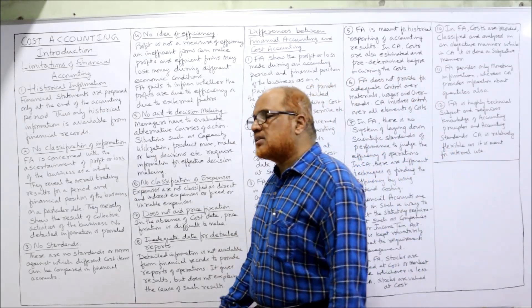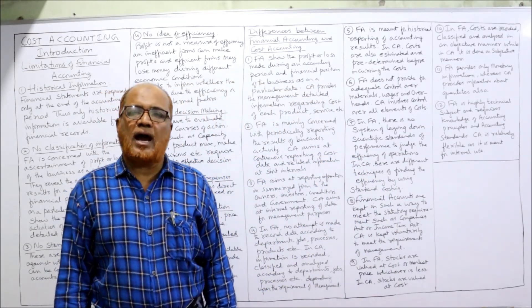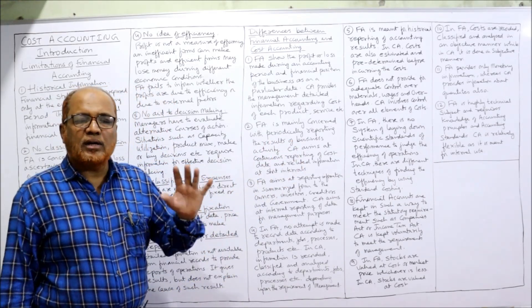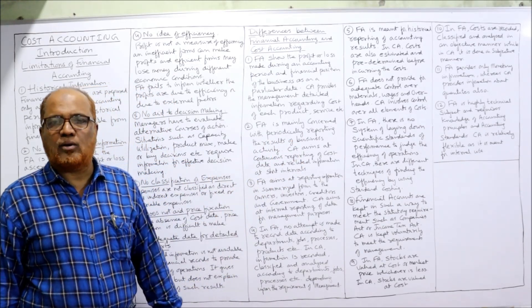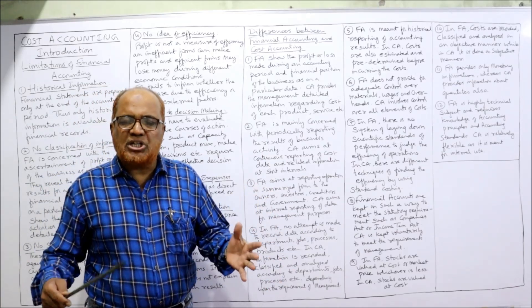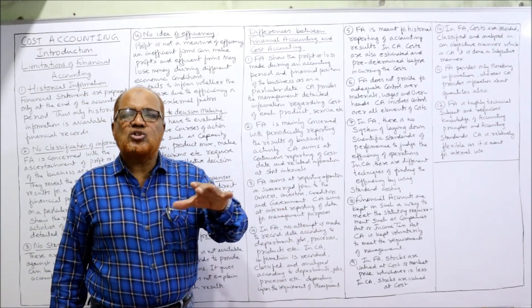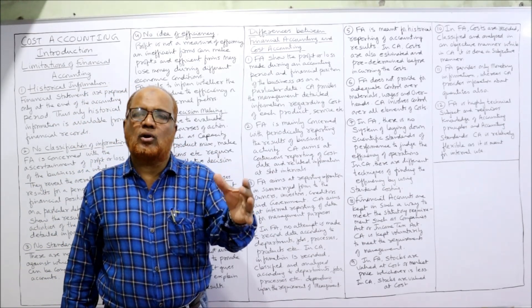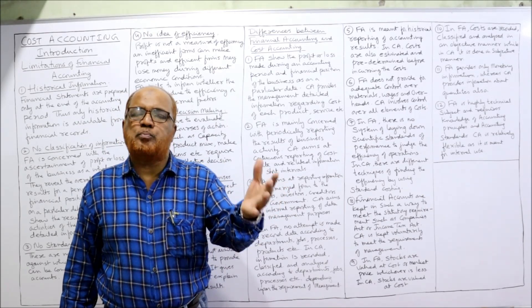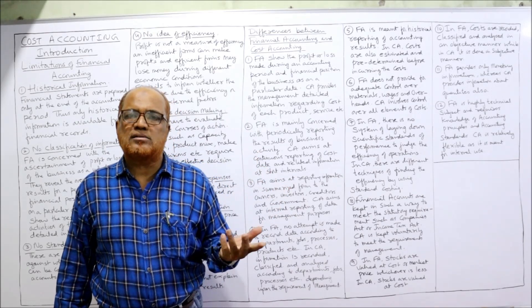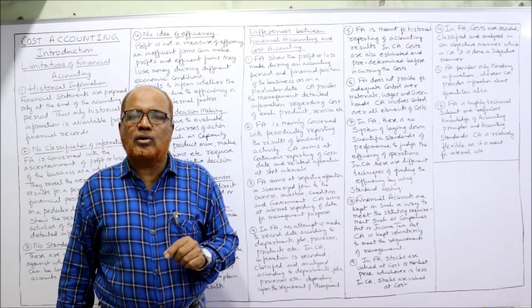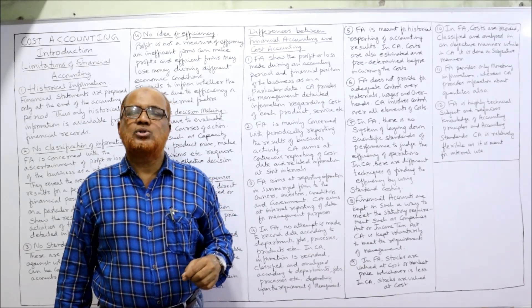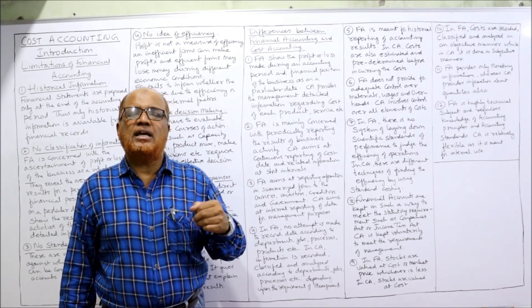Now, the differences between financial accounting and cost accounting — a very frequently asked examination question. Many differences exist; the objective itself is different. Financial accounting is maintained mainly to ascertain profit or loss at the end of the year and to find out the financial position, whereas the objective of cost accounting is to ascertain and control the cost. The objective is entirely different.